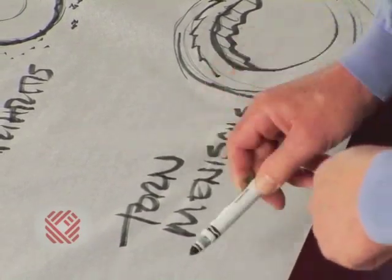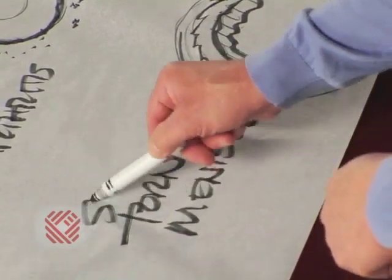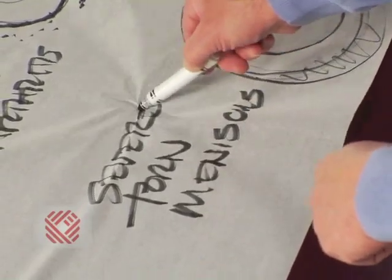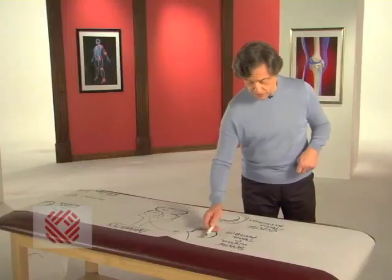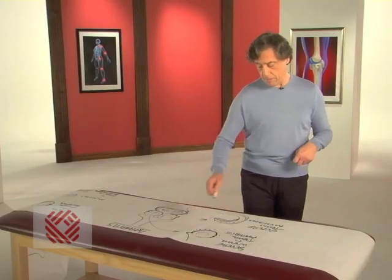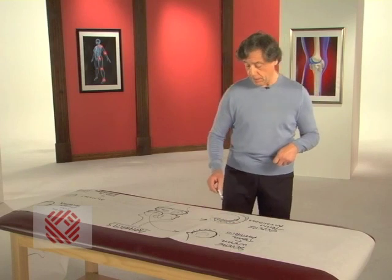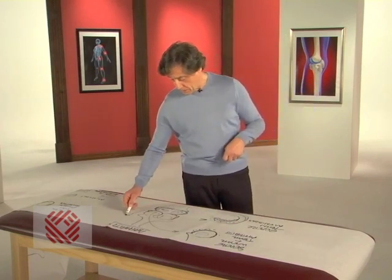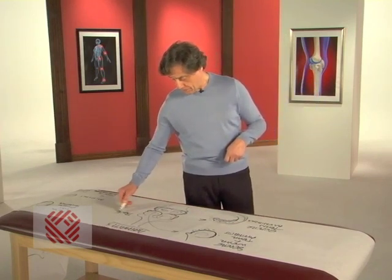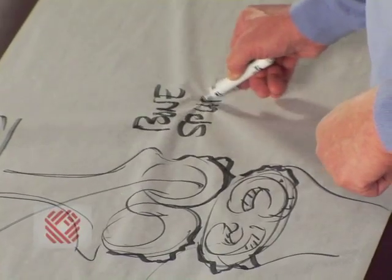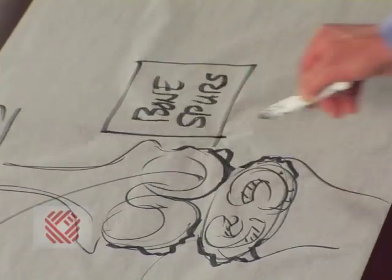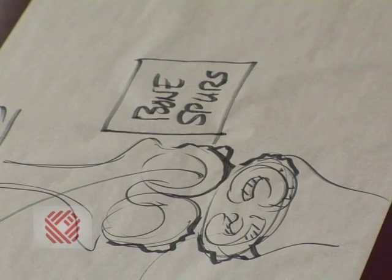A severe torn meniscus with a severe wear and tear pattern on the thigh bone with significant bone spurs — a picture of advanced osteoarthritis.